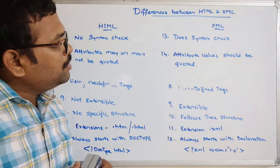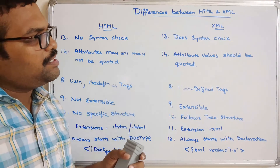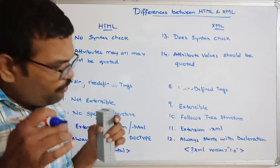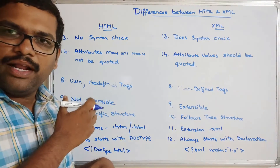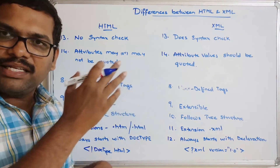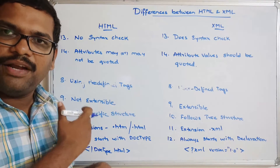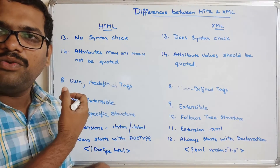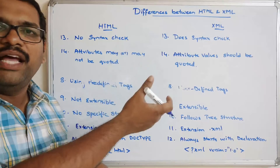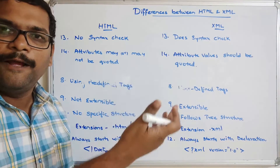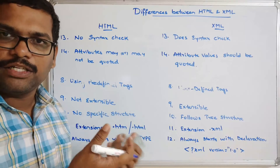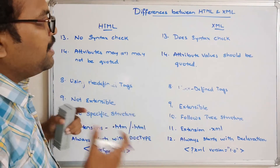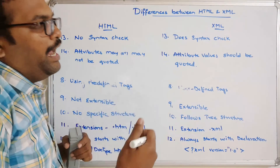So these are the major differences between HTML and XML. HTML is not extensible while XML is extensible because HTML uses predefined tags and XML uses customized tags. HTML focuses on presentation, while XML focuses on transporting data between different applications written in different languages.